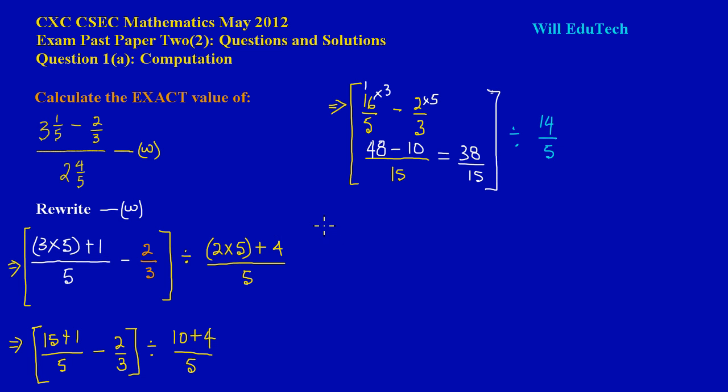Now we can just take this down here my friends, and we can see what we have here is really 38 upon 15, which all of this has worked out to be, is being divided by 14 upon 5. Now if you notice we are dividing fractions here, and to divide fractions it is the same as multiplying by the reciprocal.